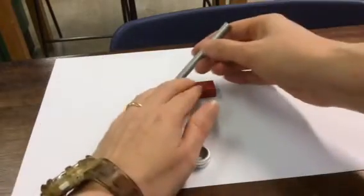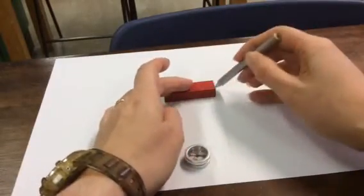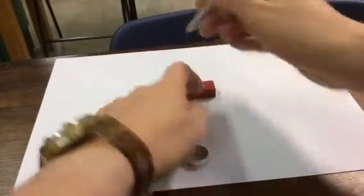Put the magnet in the centre of the paper and draw around it. Label the north and south poles.